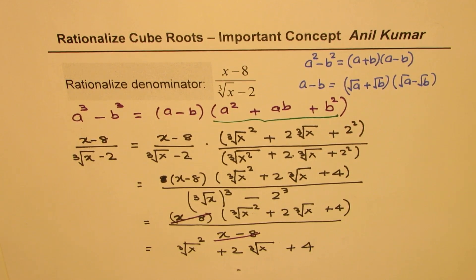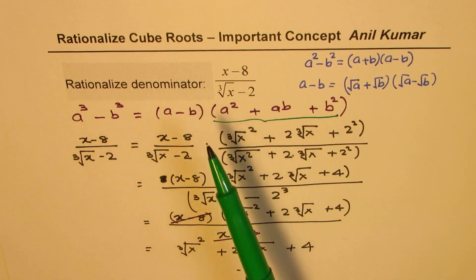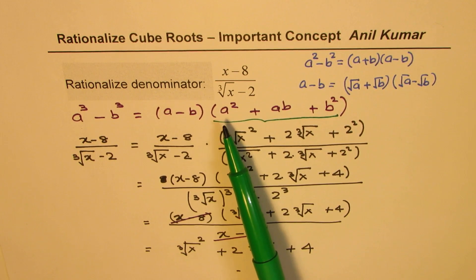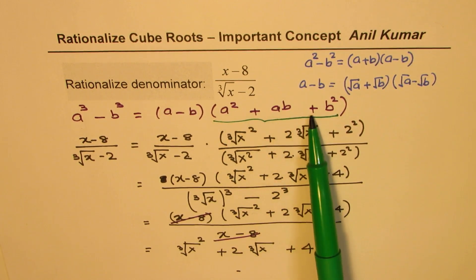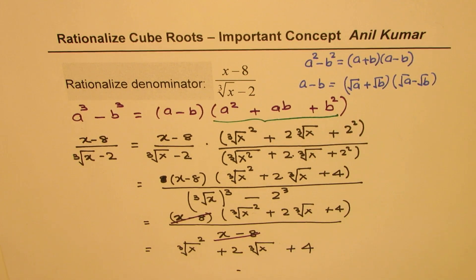Do you get it? So, that is how we rationalize a cubic root function. So, I hope these steps are absolutely clear. Remember, to rationalize, in the case of cubes or cubic roots, we have to multiply by a factor, which is a square plus ab plus b square, just as we have done here.